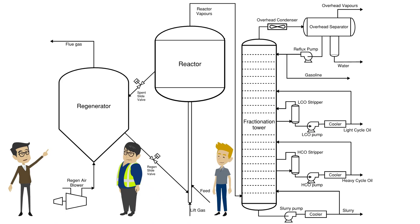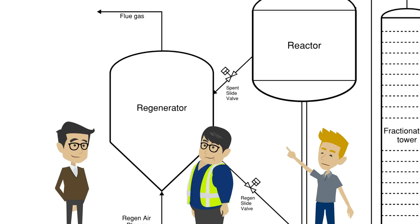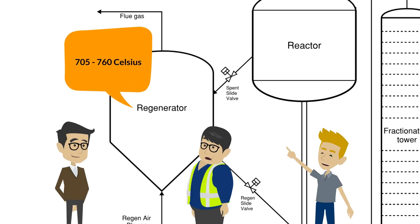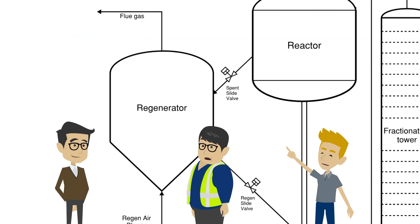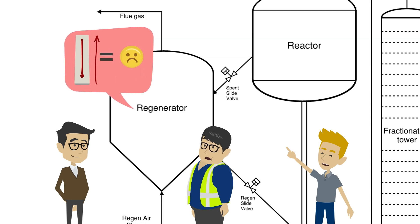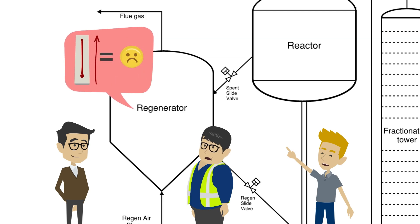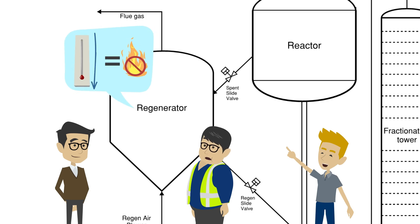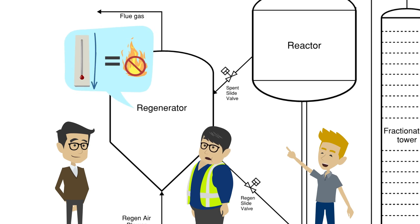What temperature does the regenerator operate at? The regenerator operates around 705 to 760 degrees Celsius. If the temperature gets too high, then the temperature would exceed the design temperature of the regenerator and the flue gas equipment. If the temperature is too low, then combustion may stop or not fully regenerate the catalyst.